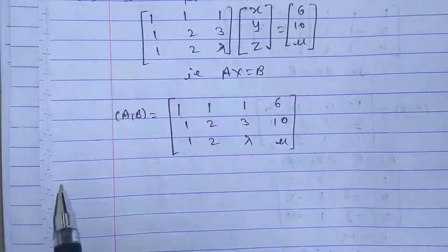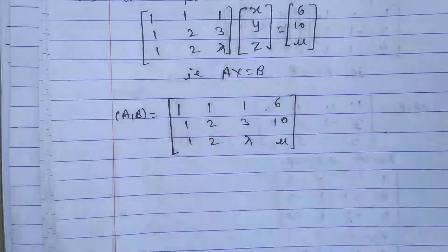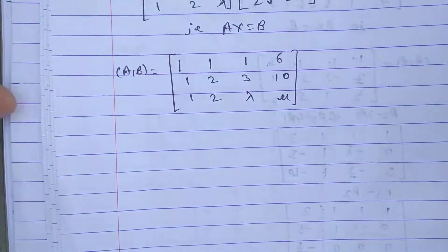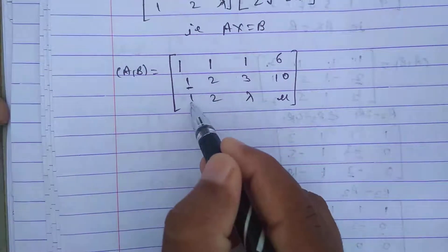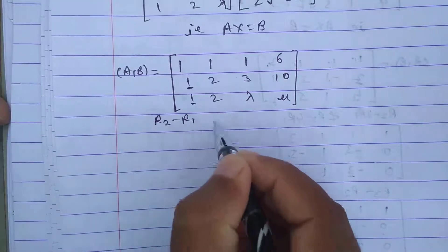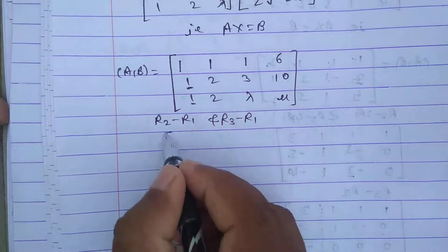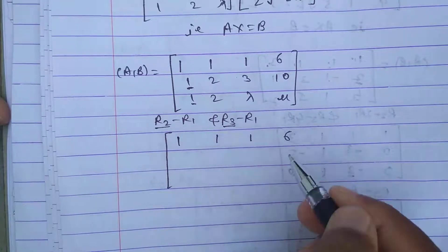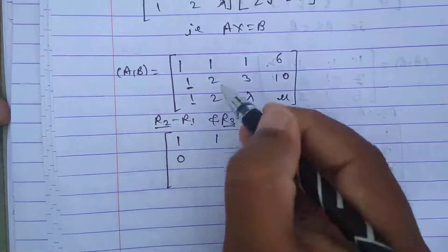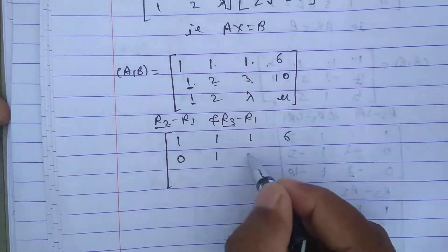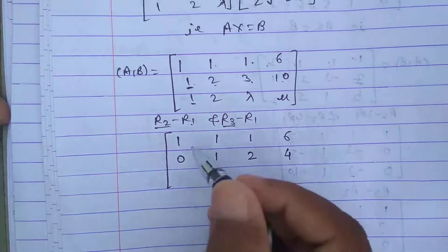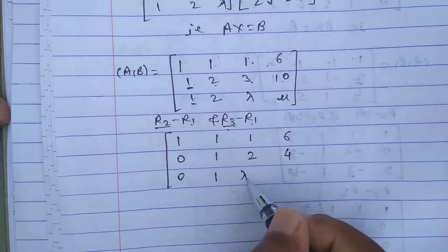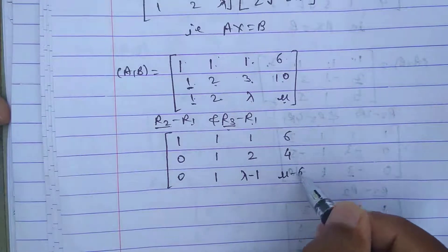To find the values of lambda and mu for different conditions, we convert the augmented matrix to echelon form using row transformations. Applying R2 minus R1 and R3 minus R1: R1 stays as is; R2 gives 0, 1, 2, 4; R3 gives 0, 1, lambda minus 1, mu minus 6.